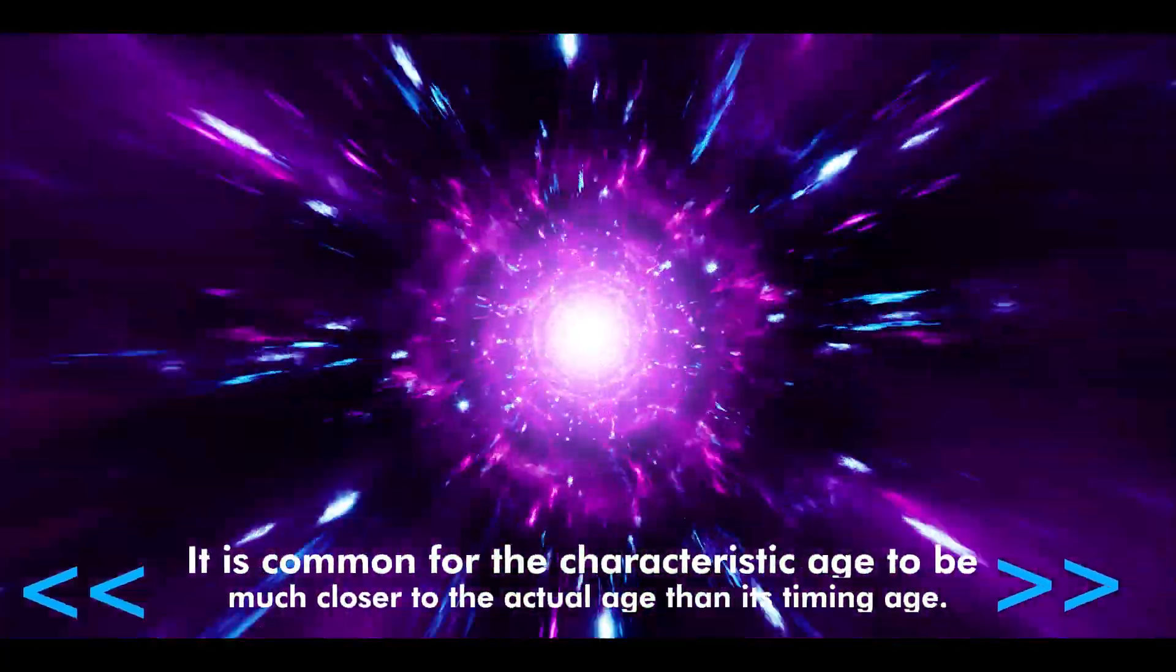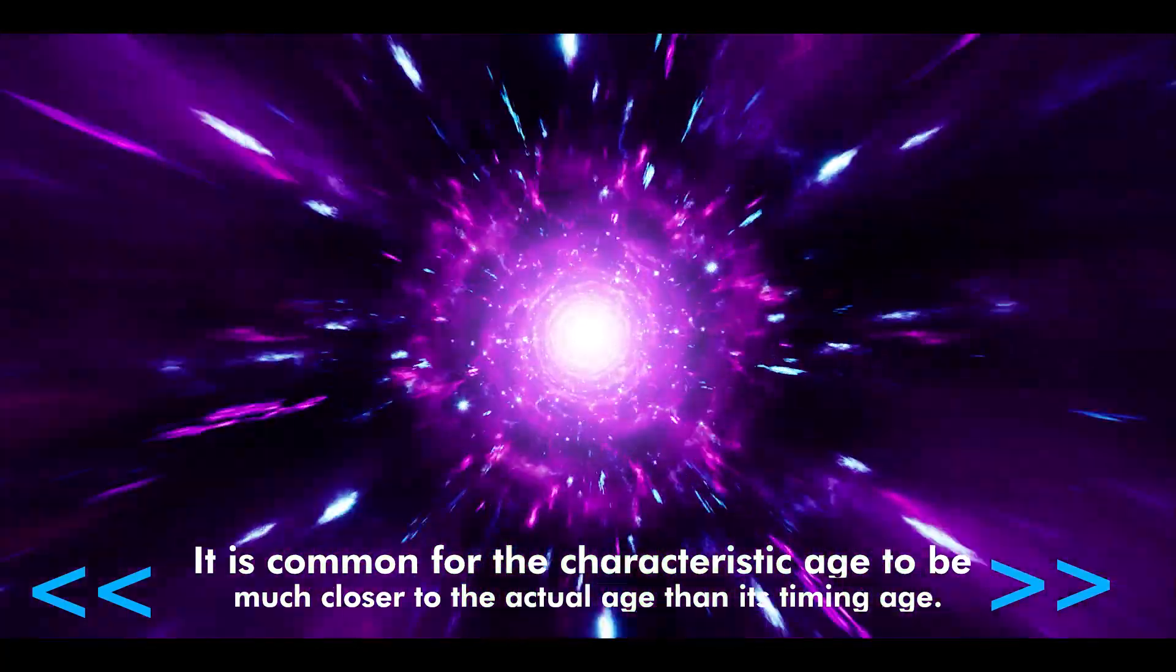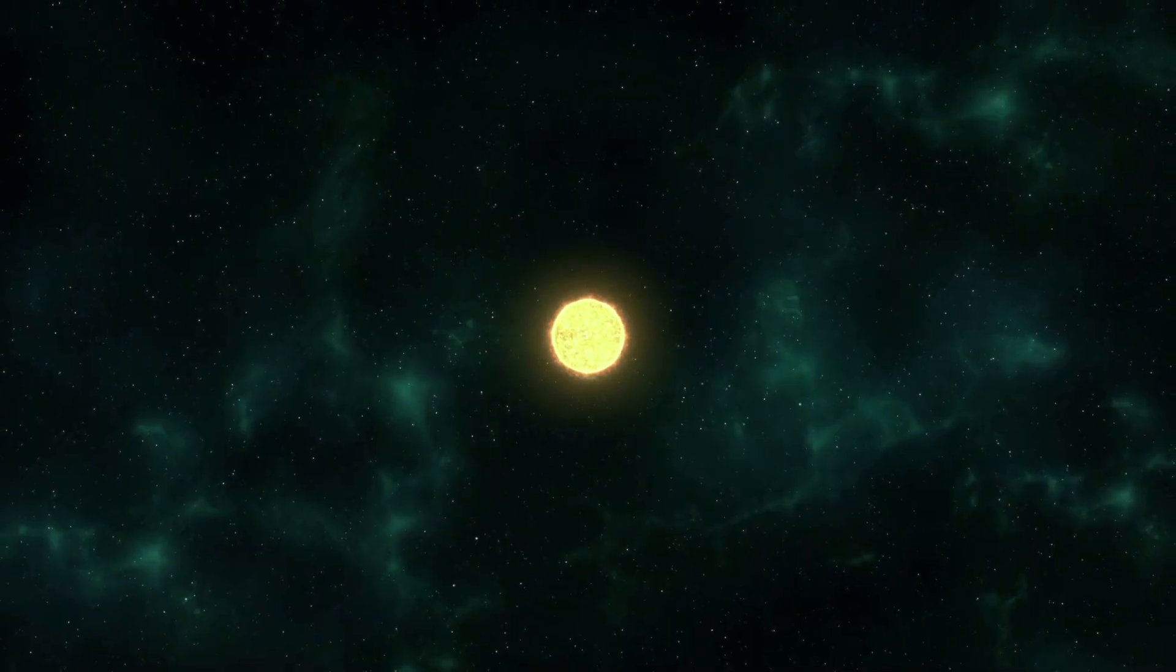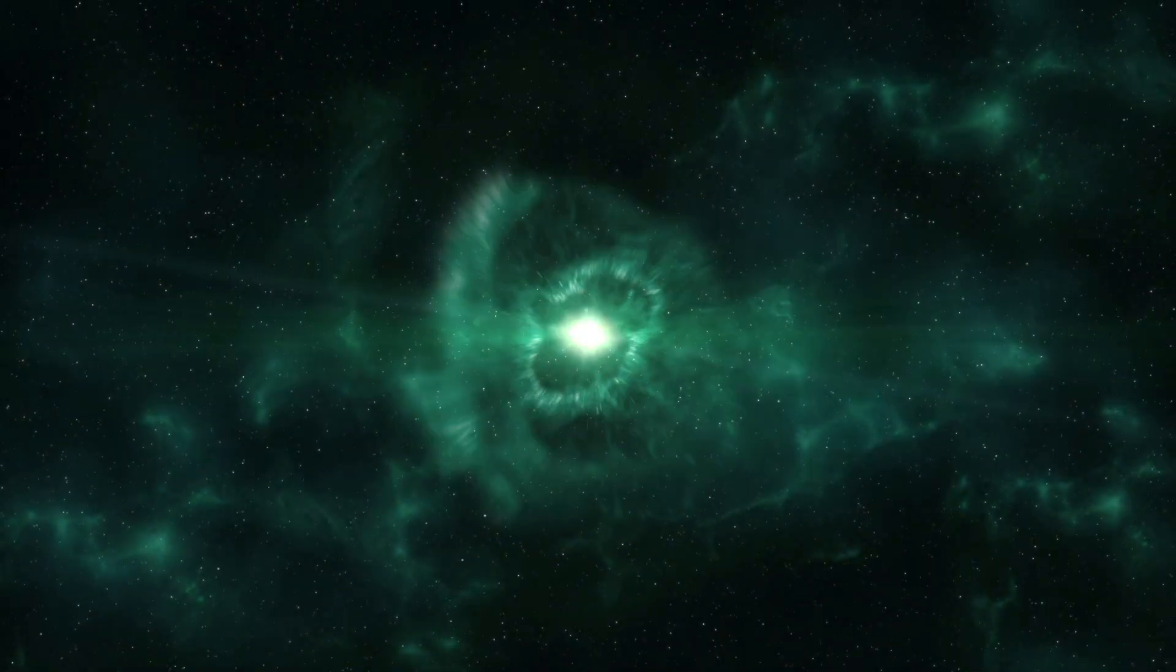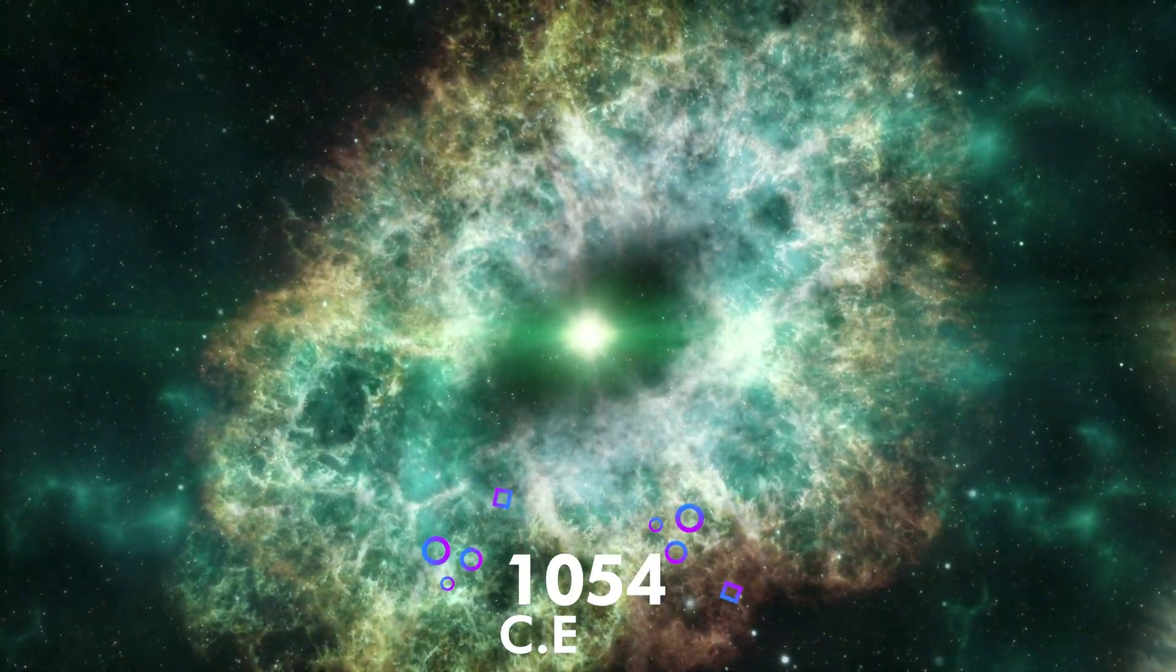It is common for the characteristic age to be much closer to the actual age than its timing age. The Crab pulsar took 1240 years to form during a supernova explosion observed in 1054 CE.